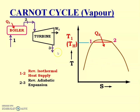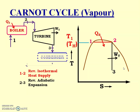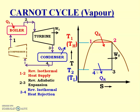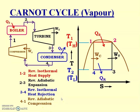The next process is 2 to 3: reversible adiabatic expansion, which is an isentropic process. Due to that, it is a vertical line, because entropy remains constant. Process 2 to 3 gives us work done by the turbine. The next process is 3 to 4 in the condenser, where heat is rejected — reversible isothermal heat rejection — drawn as a horizontal line. And process 4 to 1 is reversible adiabatic compression, where entropy remains constant, so it is a vertical line.